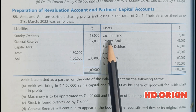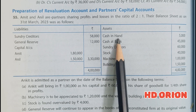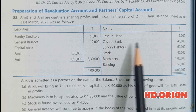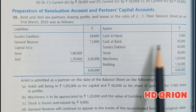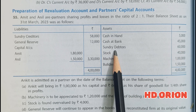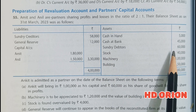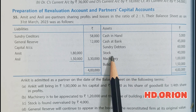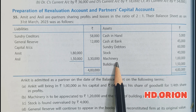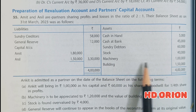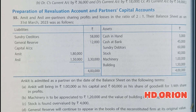On the asset side: cash in hand rupees 5,000; cash at bank rupees 45,000; sundry debtors rupees 60,000; stock rupees 40,000; machinery rupees 1,00,000; and building rupees 1,50,000.